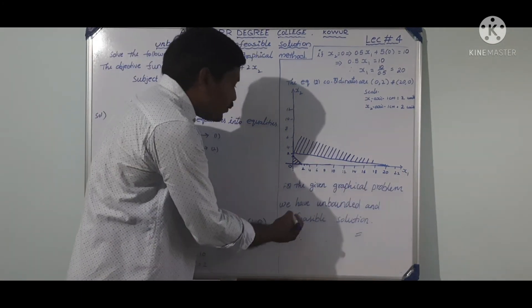For equation 1, substituting x2 equal to 0: x1 plus 0 equal to 1, therefore x1 equal to 1. The coordinates for equation 1 are (0, 1) and (1, 0).